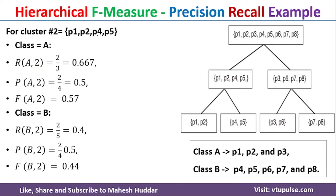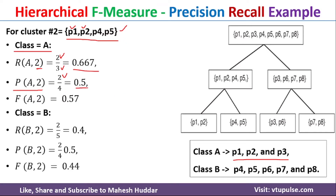Coming to the second cluster, which contains 4 objects: P1, P2, P4, and P5. For class A, the recall of class A with respect to cluster 2: class A has 3 objects — P1, P2, P3 — out of which P1 and P2 are present in cluster 2, so the numerator is 2, divided by N_A which is 3, giving 0.667. Precision of A2 equals 2 divided by 4 (the number of objects in cluster 2), which equals 0.5.